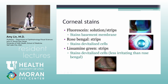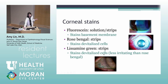For corneal stains, most commonly we use fluorescein, which comes in solution or strips and stains the basement membrane. Rose bengal stains devitalized cells — it's easy to see devitalized cells in both the cornea and conjunctiva. Lissamine green does the same thing but is much less irritating than rose bengal. Rose bengal stings even with topical anesthetic, whereas lissamine green doesn't sting as much, and you can see the very green highlighting of conjunctival staining.